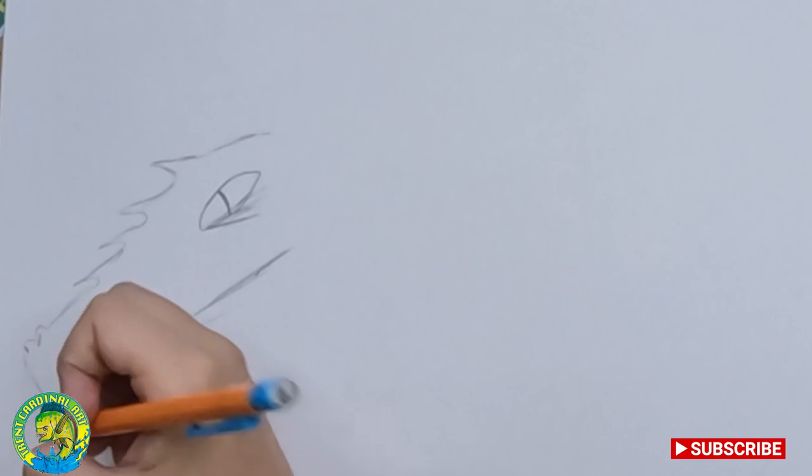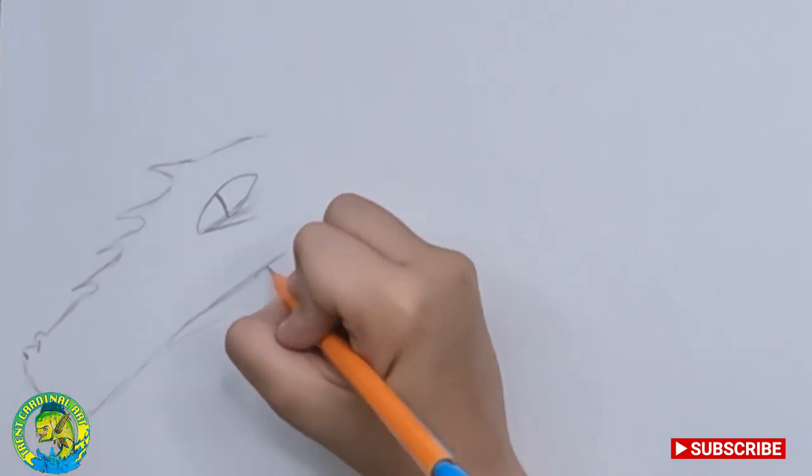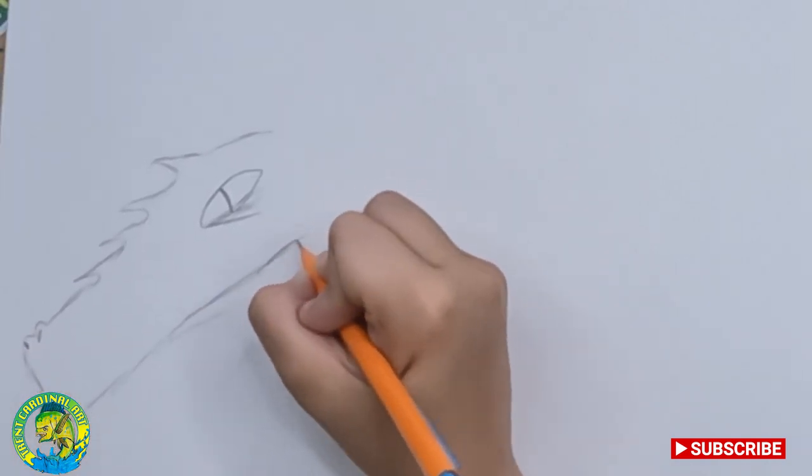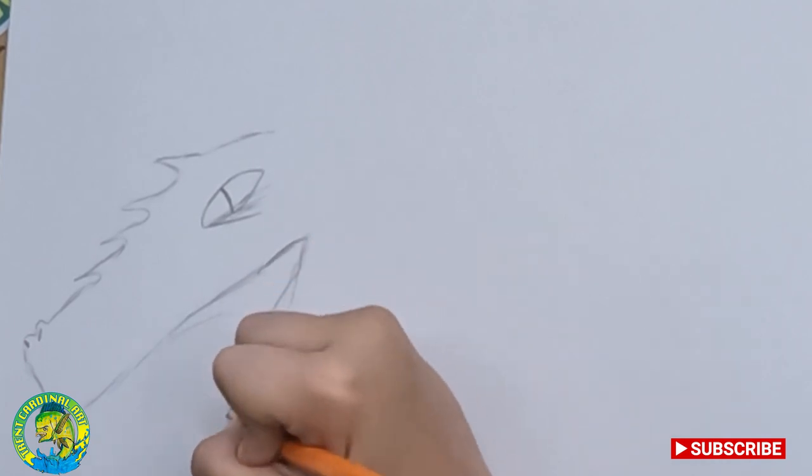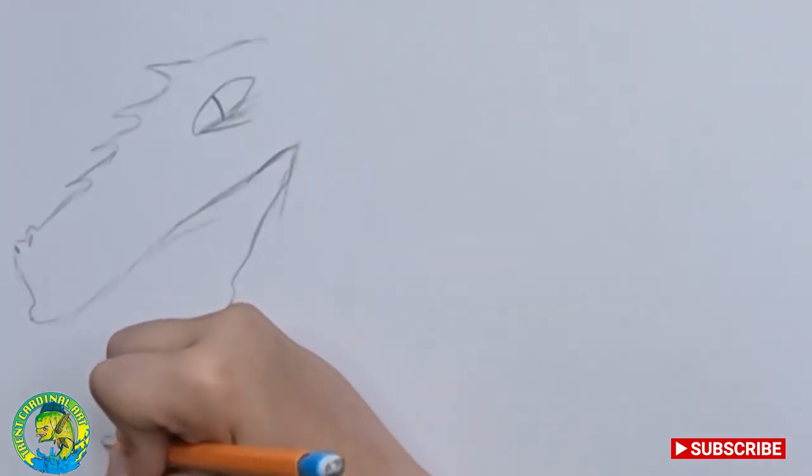Then you can make the nostrils. Then right here, it's gonna keep going a little bit and then it's gonna curve all the way down, starting to make that kind of shape right there.